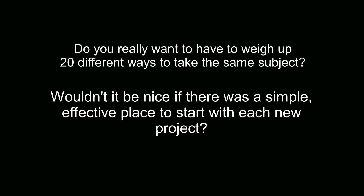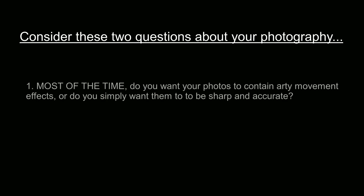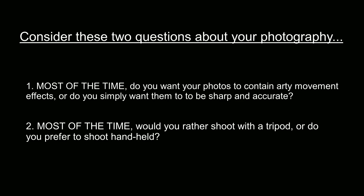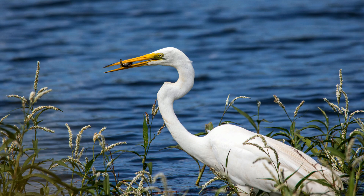To understand the logic behind the method, ask yourself these two questions. First, for the majority of your photos, do you want them to be all arty and full of fancy movement effects, or do you want them to be sharp and accurate? For most people, sharp and accurate is the answer, and the key to a sharp photo is a good fast shutter speed, especially when there's action involved. Second, would you rather take all your photos on a tripod, or do you prefer to shoot handheld? Obviously we prefer to shoot handheld, and to prevent camera shake, what do we need? A good fast shutter speed. So despite all those different ways we can take a photo, most of the time what we really want is the fastest shutter speed we can get.